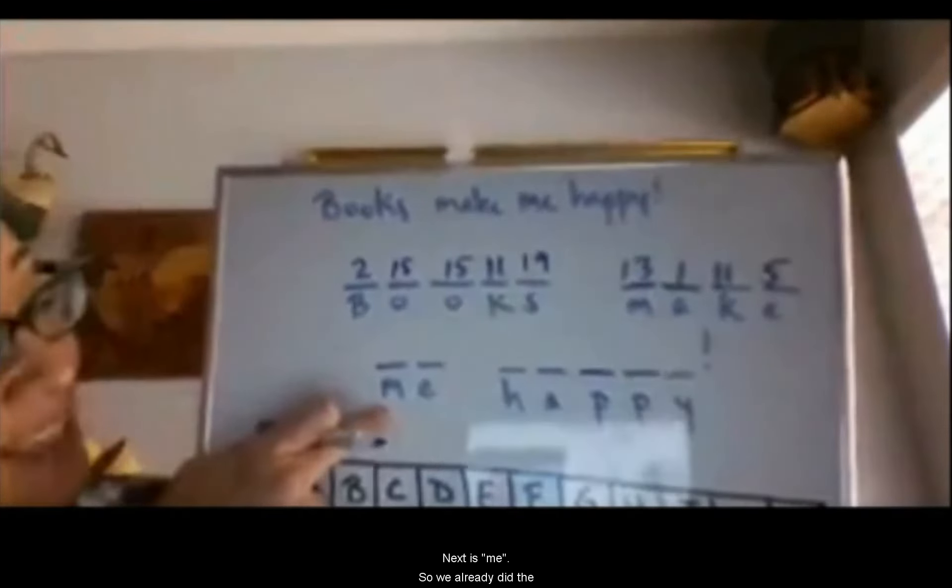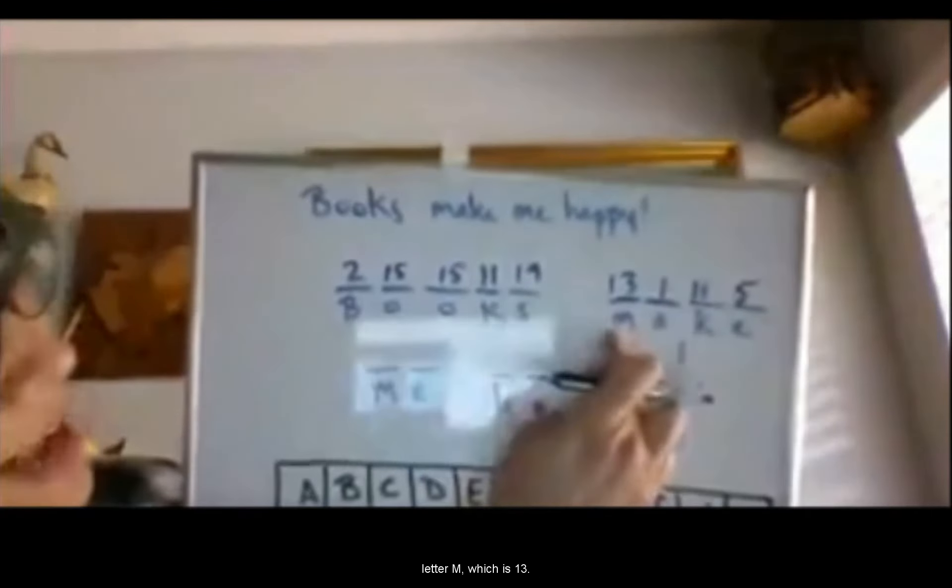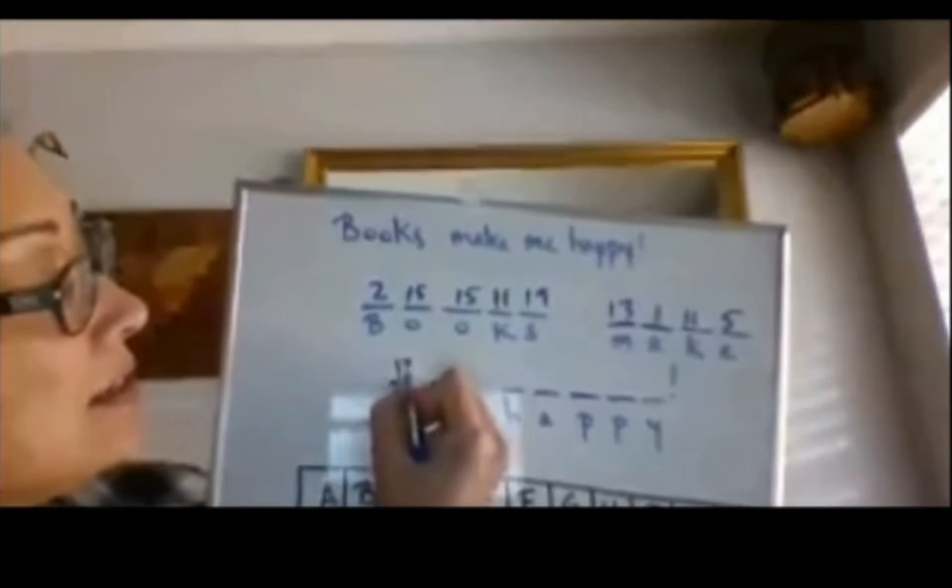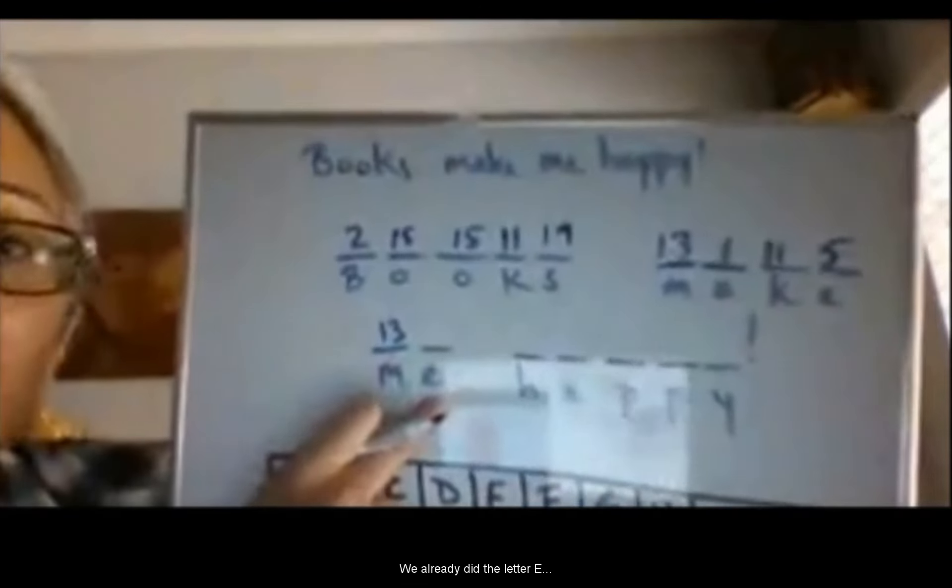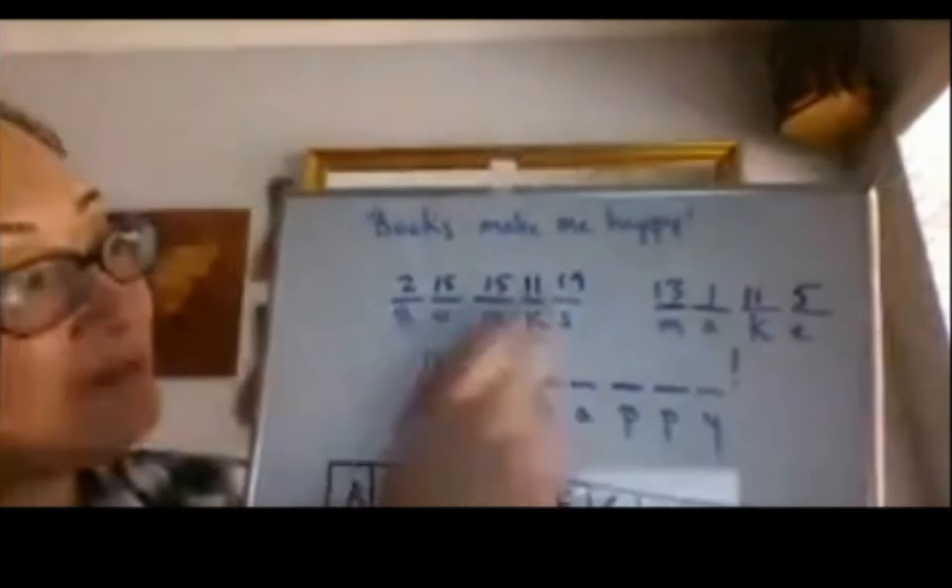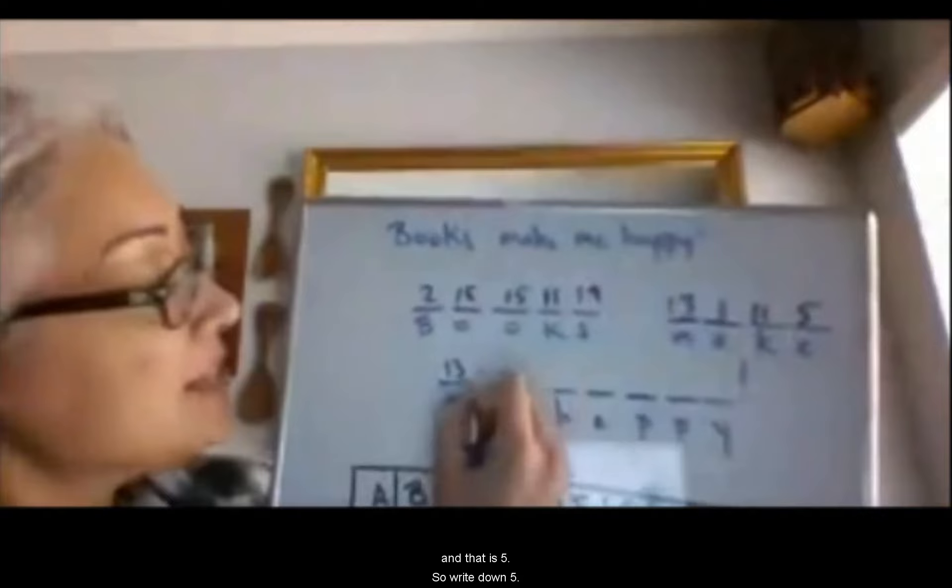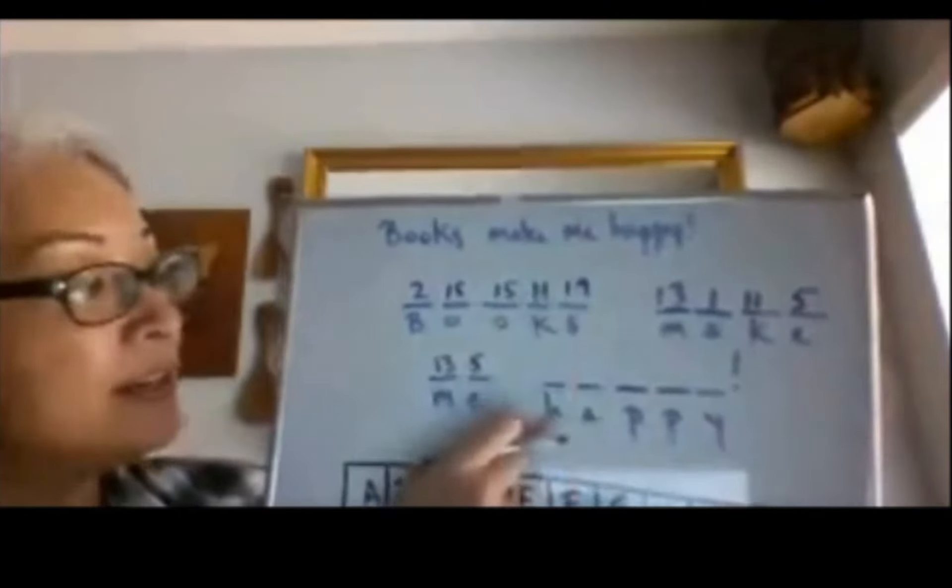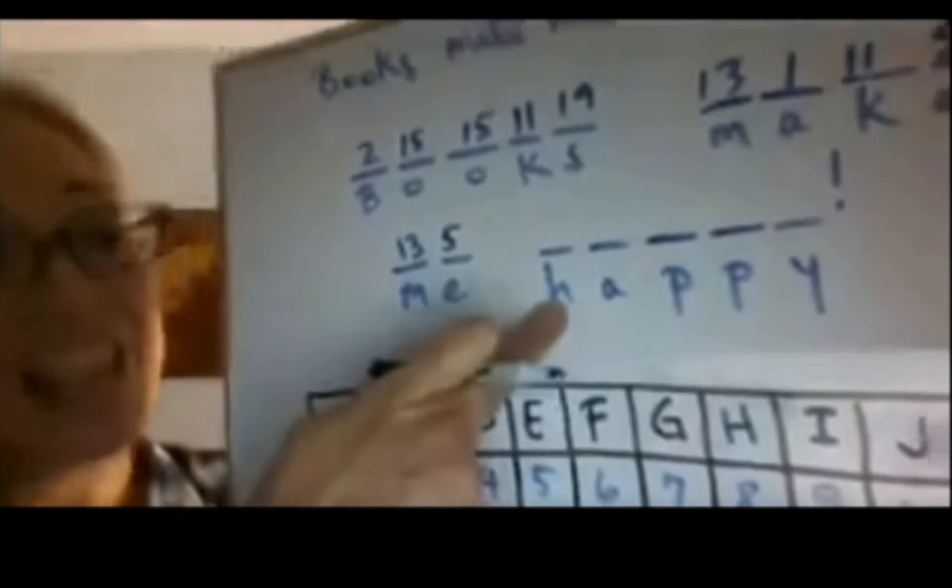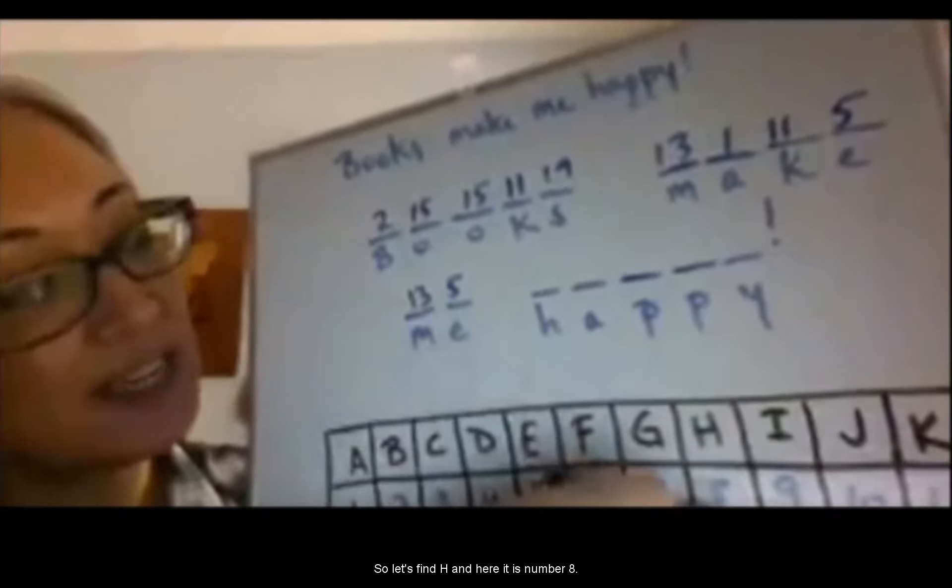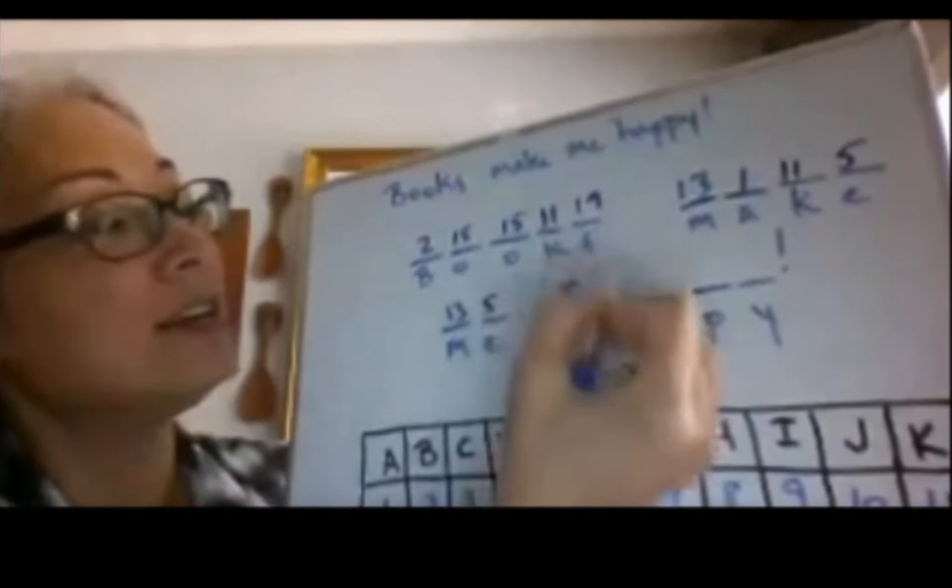Next is me. So we already did the letter M, which is 13. We already did the letter E, and that is 5. So write down 5. What letter is this? H. Very good. Let's find H. Here it is. Number 8.